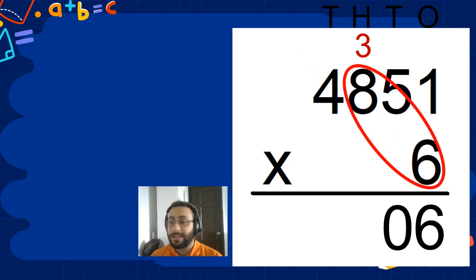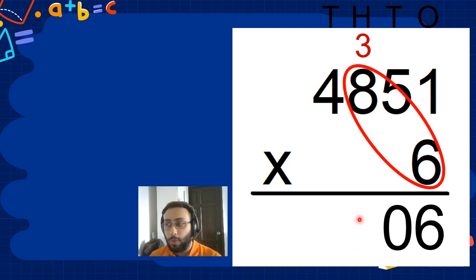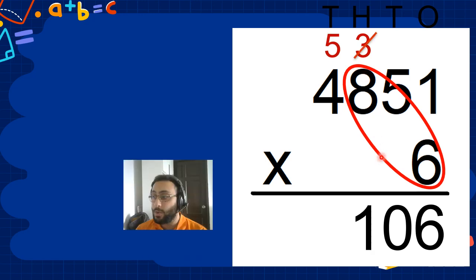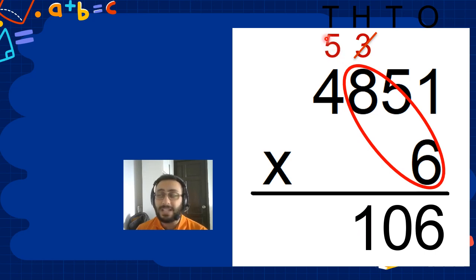So now next is 8 times 8, which is 64. Don't write it yet — we have a 4 here. 64 plus 4 is 68. So we write 8 here. We carry the 6, which is the 60, to the next — to the thousands.